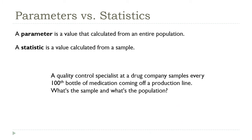For the rest of the class, we're going to be talking a lot about values calculated from data — for example, averages and percentages. It's going to be important that we have a way of distinguishing between values that describe a sample, which we'll actually be able to calculate, and values that describe a population, which generally we won't. We're going to call values calculated from the sample data statistics, and the corresponding values for the entire population are called parameters.